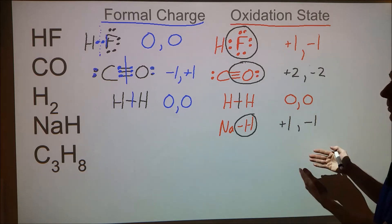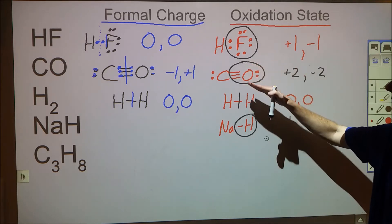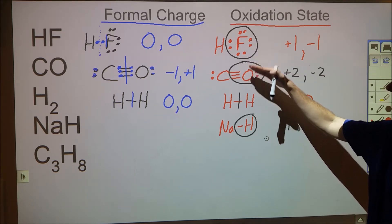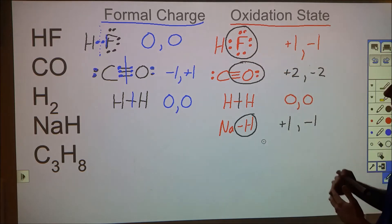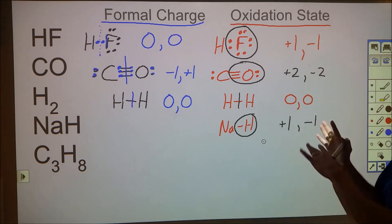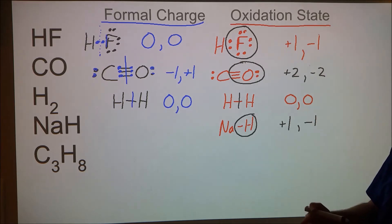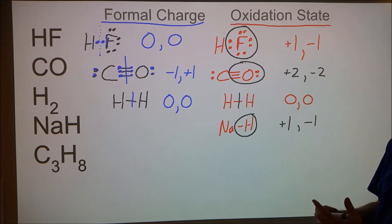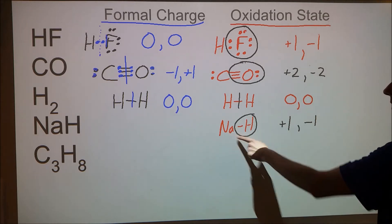The rules derive from this exploration: fluorine is always −1 unless bonded to itself. Oxygen is second most electronegative, so it's −2 unless bonded to fluorine or itself in a peroxide, superoxide, or ozone. On the other end, sodium is always +1, potassium always +1, calcium always +2, because they have the lowest electronegativity — they always lose.